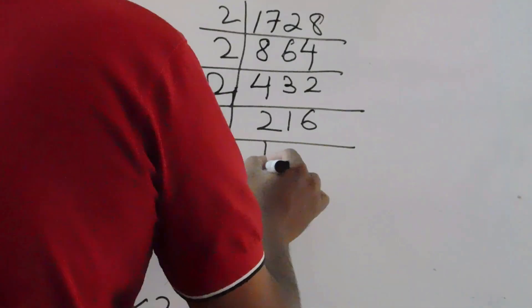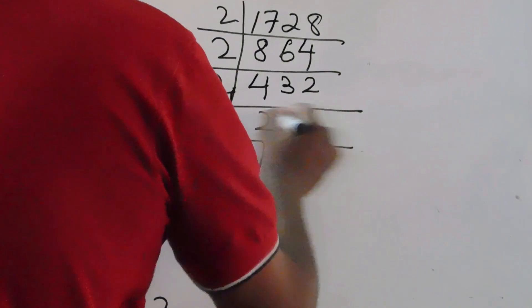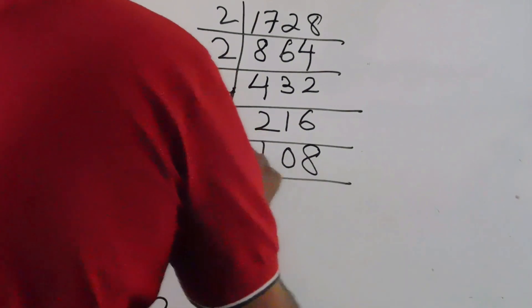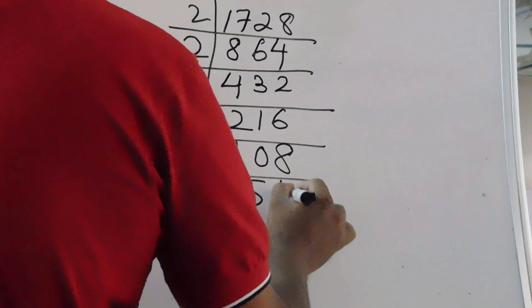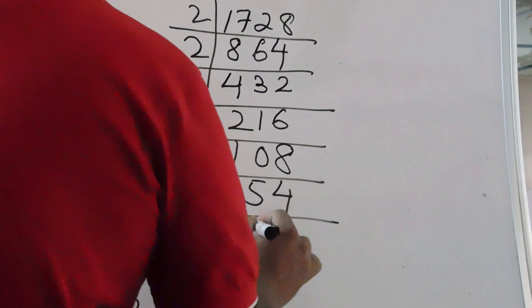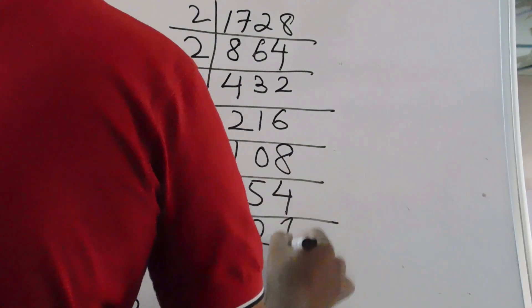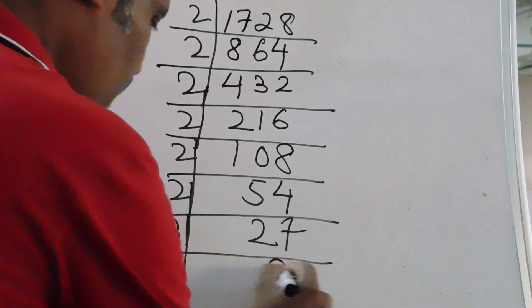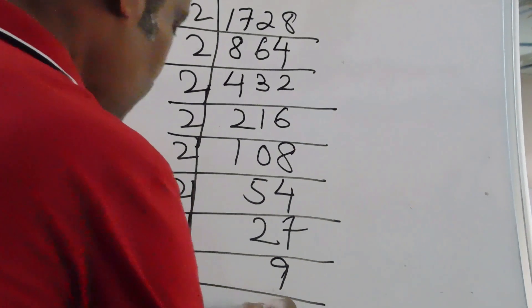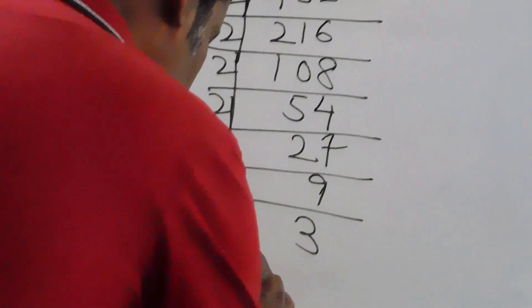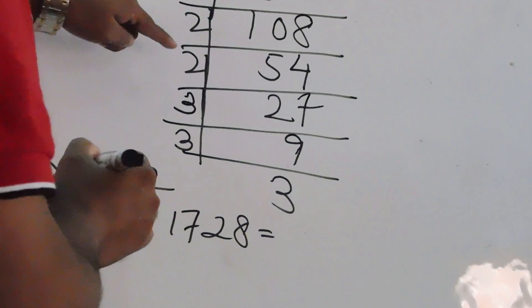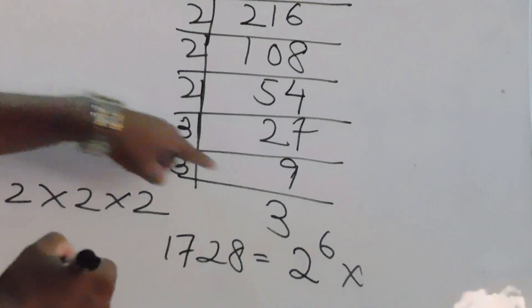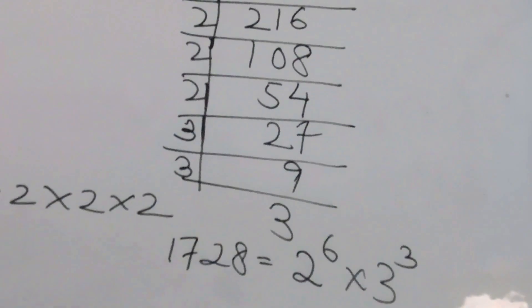Now 27 is an odd number and a multiple of 3, so divide by 3: 27 ÷ 3 = 9, and again 9 ÷ 3 = 3, and 3 ÷ 3 = 1. So 1728 equals how many 2s? 1, 2, 3, 4, 5, 6 — so 2 to the power 6. How many 3s? 1, 2, 3 — so 3 to the power 3. The answer is 2 to the power 6 into 3 to the power 3.